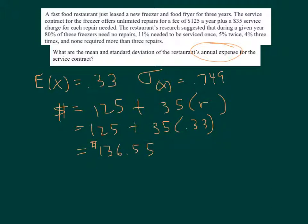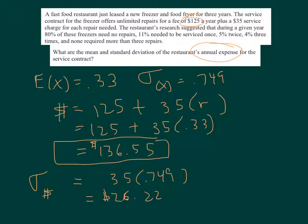Now, with respect to the standard deviation of the expense, you're always going to pay this 125. That's not going to fluctuate. The question is, plus or minus the number of repairs. So for your standard deviation of cost, it's simply going to be the $35 times that standard deviation, which is $26.22. So your annual cost is $136.55, or your expected annual cost is that, give or take $26 and $0.22.